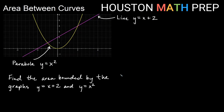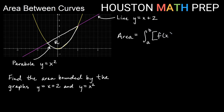Let's look at some examples. We're going to find the area bounded by y equals x plus 2 and y equals x squared. y equals x plus 2 is a line, and y equals x squared is a parabola. We can see the bounded region between them. Setting up the integral: the area equals the integral from a to b of f of x minus g of x dx. We need to figure out which function is f and which is g.